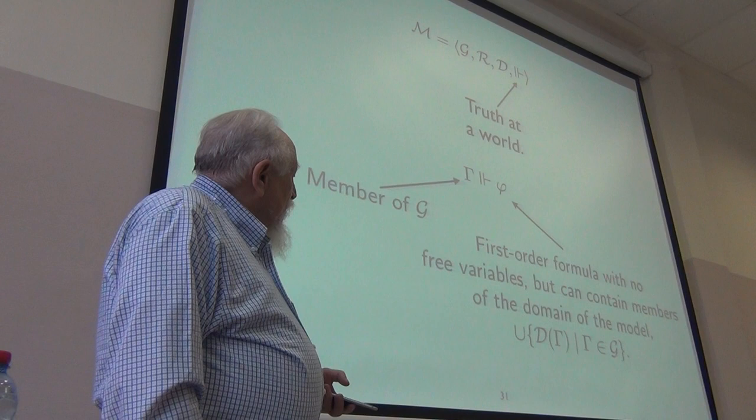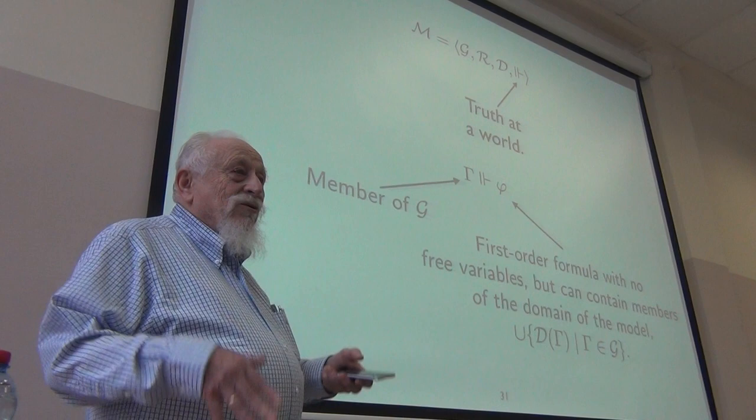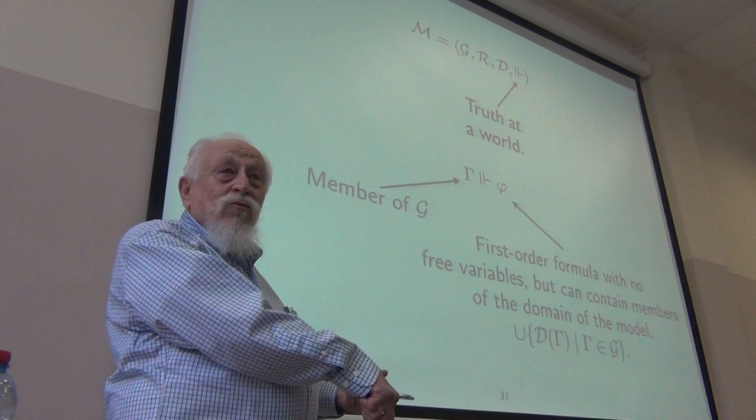The domain of the model is just lump all the domains of the worlds together. Members of the domain can appear in a formula even if they're not in the world that you're evaluating the formula in.